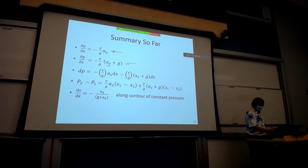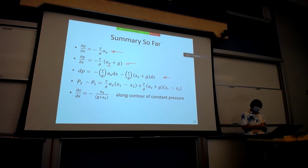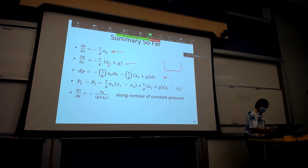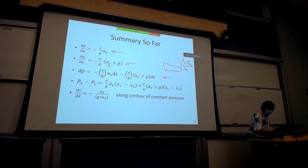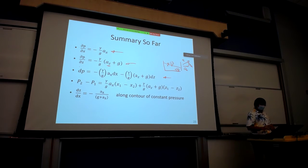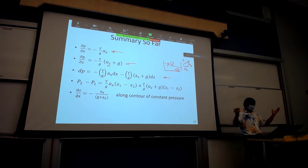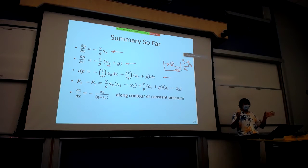When we look at the total derivative of pressure, we can combine how pressure changes in both horizontal and vertical directions. Integrating between any two points in the fluid — in a system being accelerated with components AZ and AX — the pressure difference from point one to point two is a function of movement in the horizontal direction, movement in the vertical direction, and the acceleration fields in both directions.